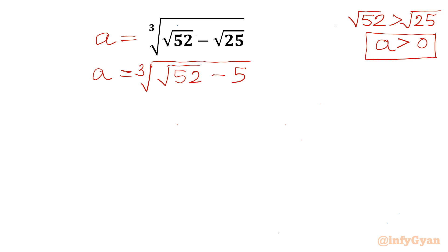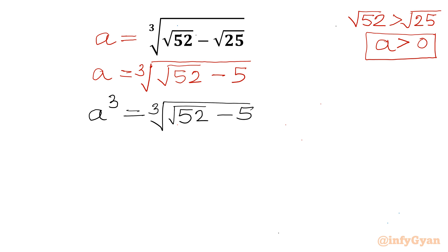Now I will consider cubing both sides. So a cubed will be equal to cube root of (square root 52 minus 5), whole cubed. Now we can cancel the cube root with the cube, so a cubed will be equal to square root 52 minus 5.